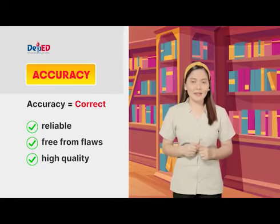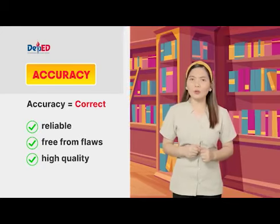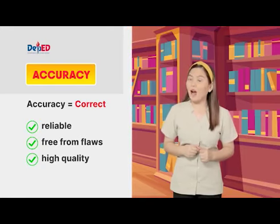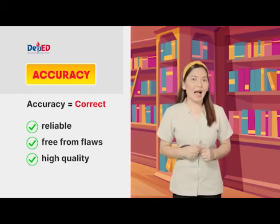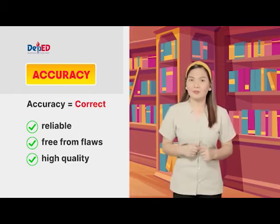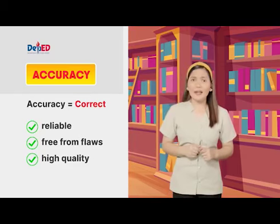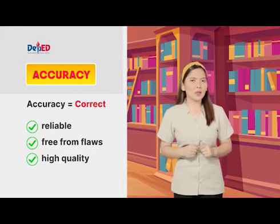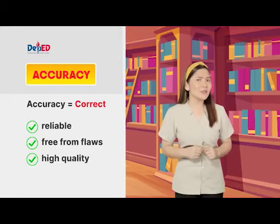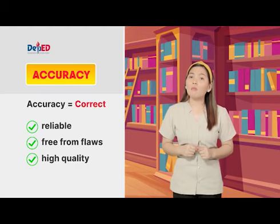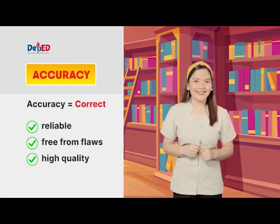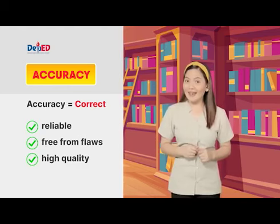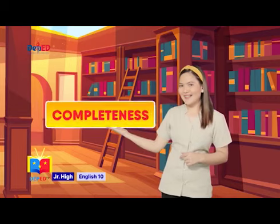For instance, news reports about the number of COVID-19 cases, recoveries, and deaths should be correct and exact for it to be considered reliable. Getting reliable information in these challenging times could help us take control of the disease, monitor our own progress, and be safe. That is accuracy. Second is completeness.